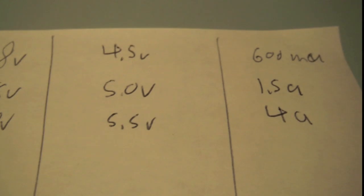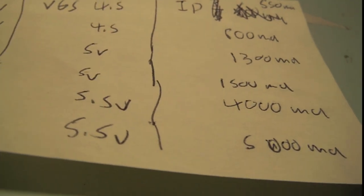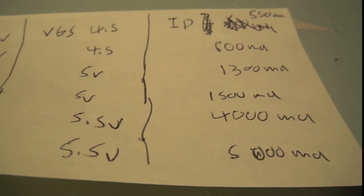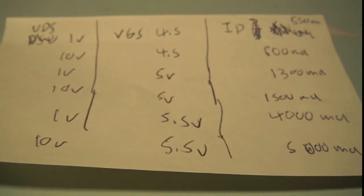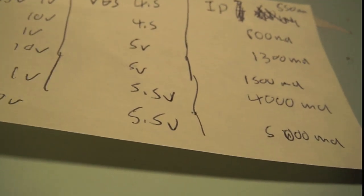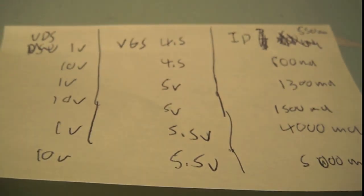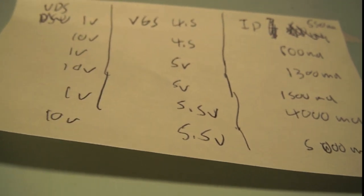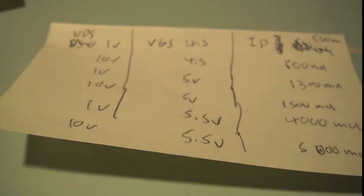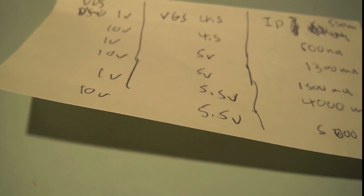What you need to take away about N-channel MOSFETs is that they're voltage controlled. The gate is controlled by a voltage, not a current, so there's no current limiting resistor needed, and very little current will flow through the gate. You can look up the quiescent gate current — it's very low, so you don't really need to worry about it. By changing the voltage on the gate, you can change the maximum amount of current allowed to flow from the drain through the source.